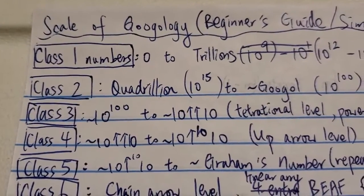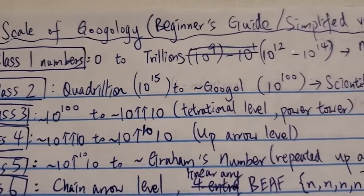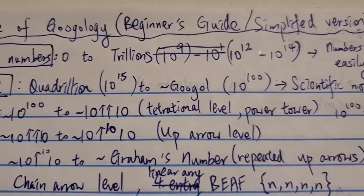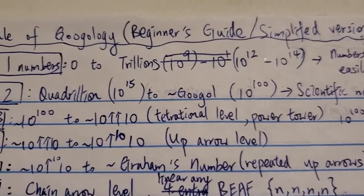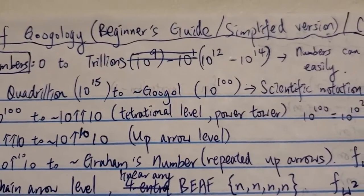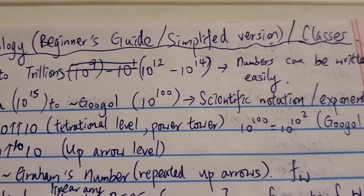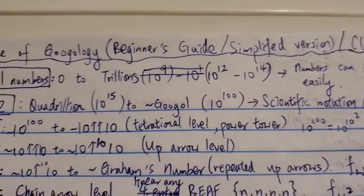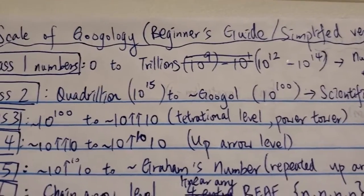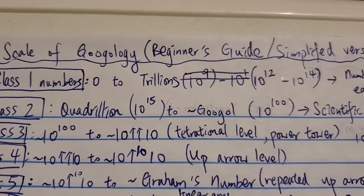Class 3 is around a Googol up to 10 double arrow 10, which is 10 to the 10 to the 10 with 10 tens. This is what I call the tetrational level or power tower level. You have to write these numbers in terms of a power tower. You cannot even write it in terms of basic scientific notation with two levels.